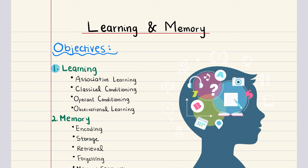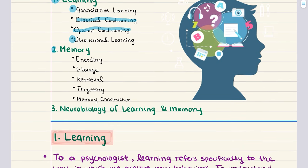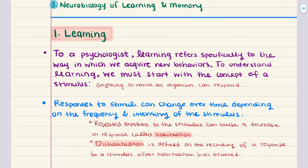Objective 1 is titled Learning. Learning refers specifically to the way in which we acquire new behaviors. Here we're going to learn about associative learning and observational learning. Within associative learning we're going to talk about classical conditioning and operant conditioning. Then we're going to move into memory, covering the three main processes of forming memories: encoding, storage, and retrieval. After that we'll discuss forgetting and memory construction. Then we'll move into the third and final objective, the Neurobiology of Learning and Memory, where we'll briefly discuss neuroplasticity. With that, let's get started with objective 1.